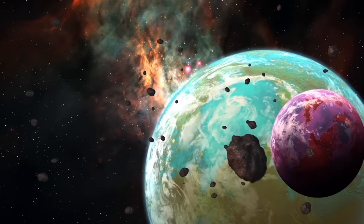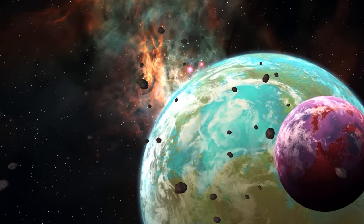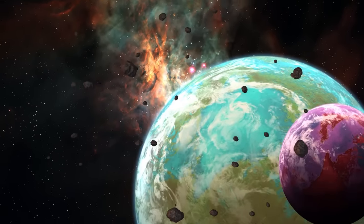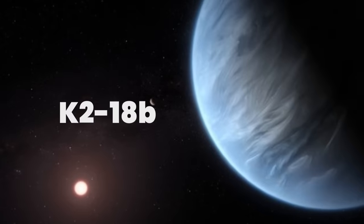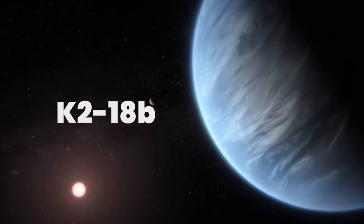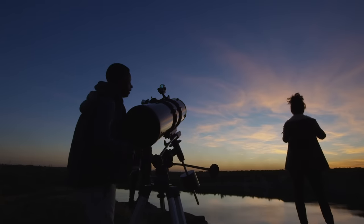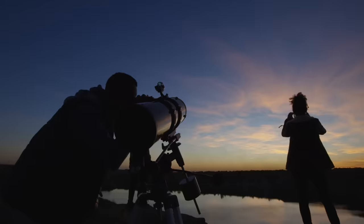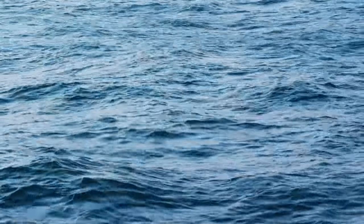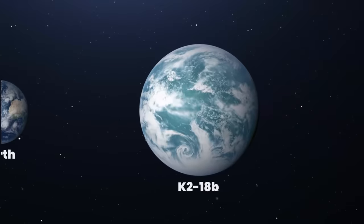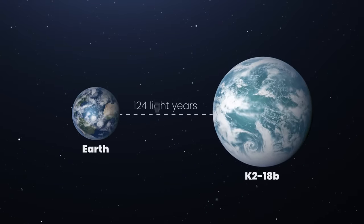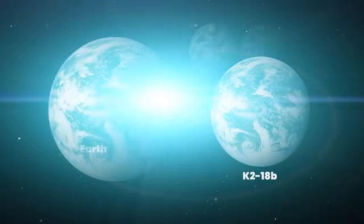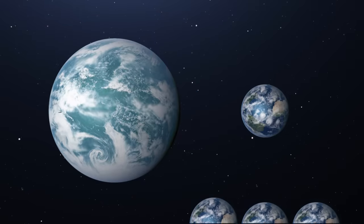One such exoplanet discovered by Kepler that has recently generated excitement among researchers is called K2-18b. In September 2019, two scientific teams independently announced that they found signs of liquid water in the planet's atmosphere. Situated 124 light-years away from Earth, K2-18b is about eight times the mass of Earth and three times as big.